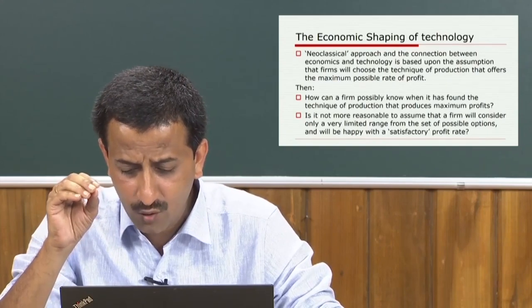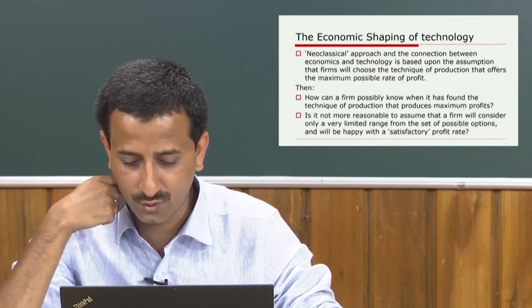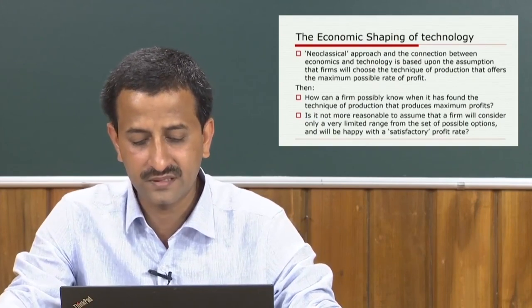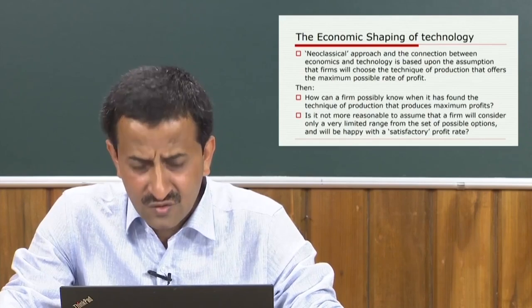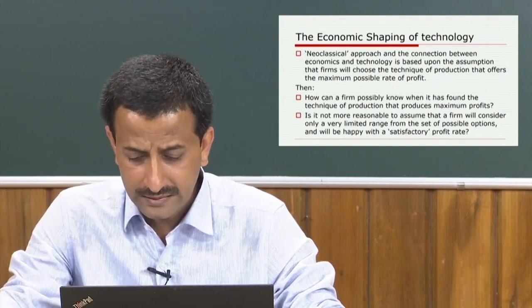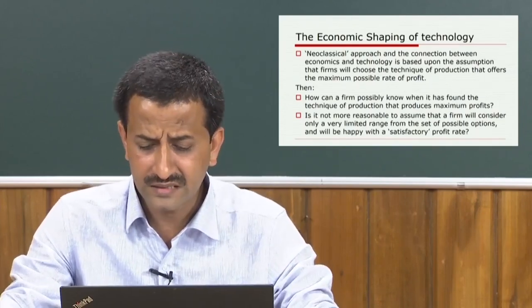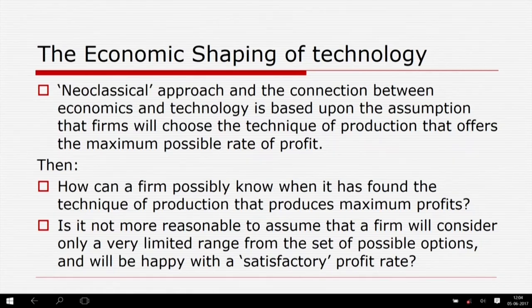The neoclassical approach — the dominant way of thinking about the connection between economics and technology — is based upon the assumption that firms will select the technique of production that offers the maximum possible rate of profit. Despite its apparent plausibility, this assumption has been the subject of much criticism within economics. The issues involved are complex; there is a useful review by Elster in 1983. They hinge upon whether human decision-making does or could conform to the strict requirements of the neoclassical model.